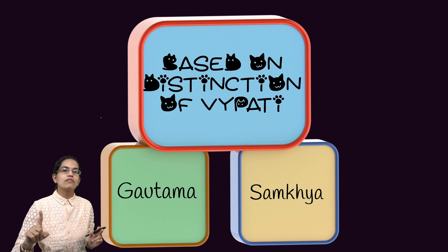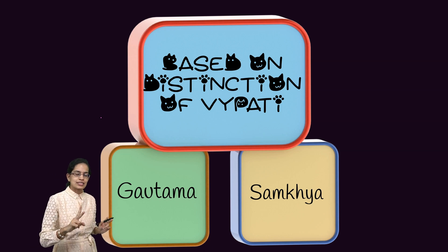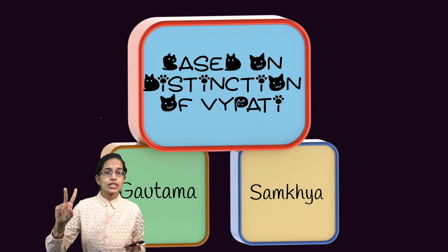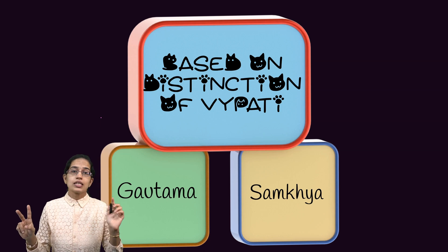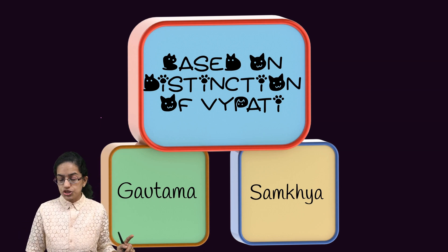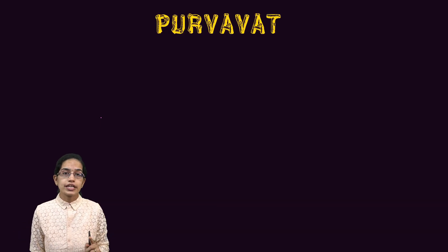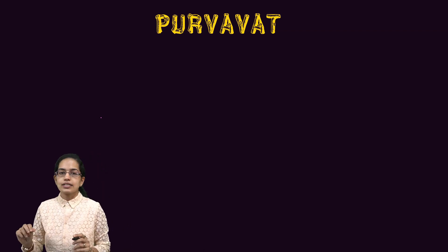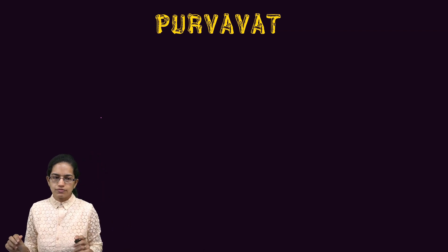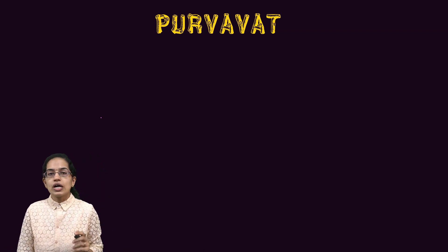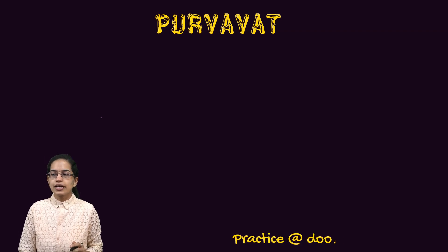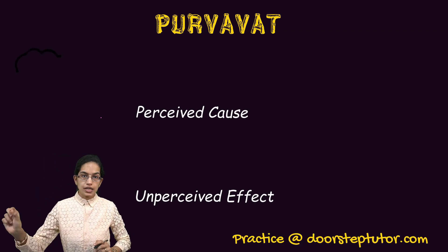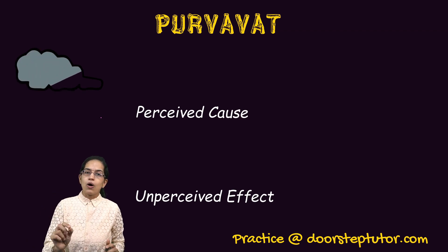The first two — Purvavat and Sesavat — deal with a relation between cause and effect. The last one, Samantiyodrasht, does not deal with the relation between cause and effect. Under Purvavat, we are trying to understand a relation with the previous happening.